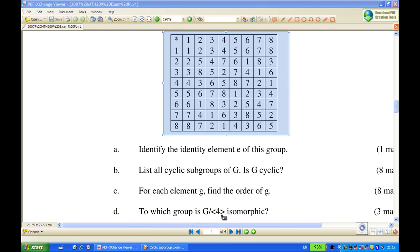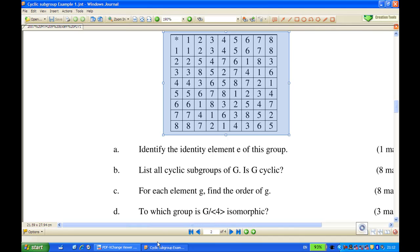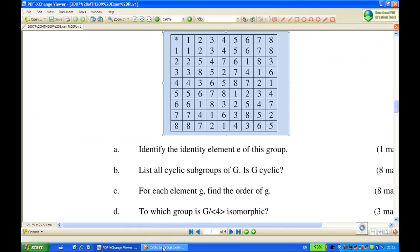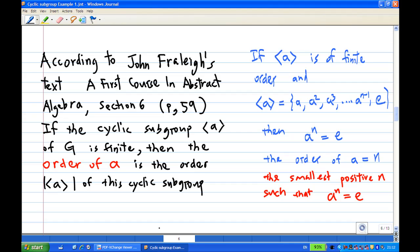To do this, let's look at some reference first. What does it mean by the order of an element? According to John Fraleigh's text, A First Course in Abstract Algebra, section 6, page 59, if the cyclic subgroup generated by A of G is finite, then the order of A is the size of the cyclic subgroup generated by A.